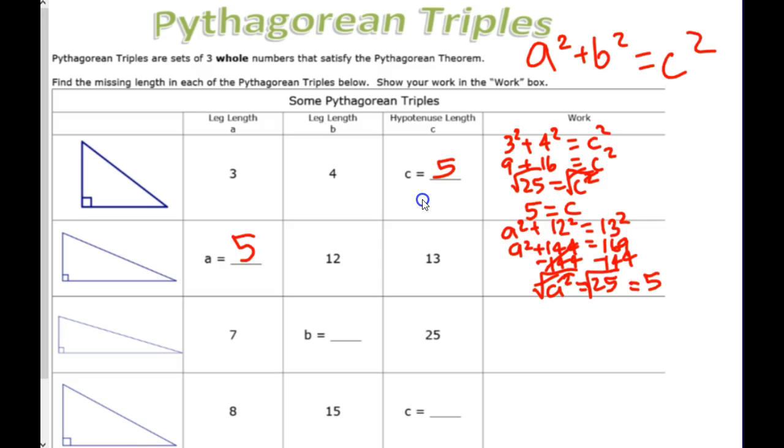Less work by using your brain. Cool? So, 3, 4, 5. We know that one. 5, 12, 13. That's another triple. Let's talk about the next one.